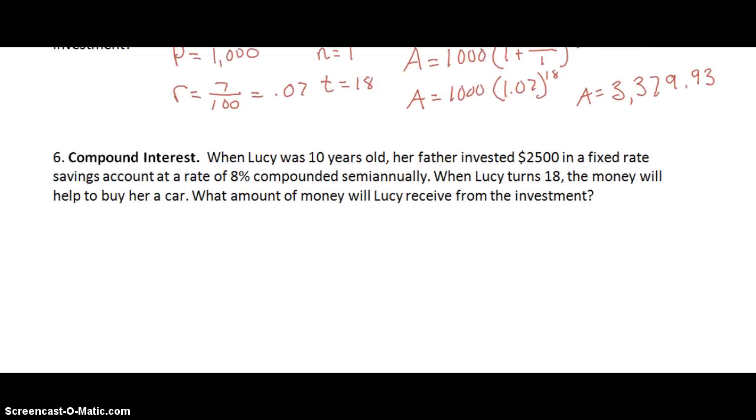So let's do one more. When Lucy was 10 years old her father invested $2,500 in a fixed rate savings account at a rate of 8% compounded semi-annually. So semi-annually means it was compounded twice a year at the half of the year and then the full of the year. So when Lucy turns 18 the money will help her to buy a car. What amount of money will Lucy receive from the investment? So let's start with our initial investment P. We're told that she invested $2,500. What's our rate this time? Our rate is 8% so we know it's going to be 0.08.